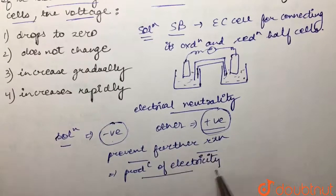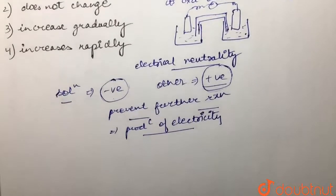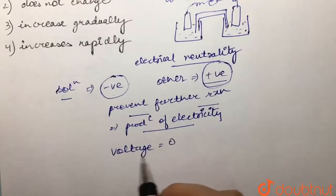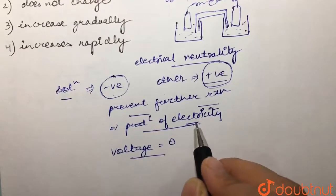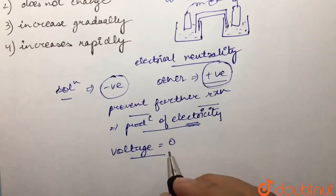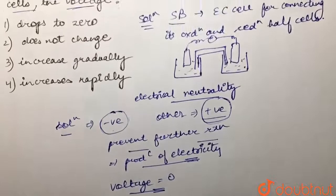basically prevent the production of electricity. Hence, we can say that our voltage would become zero because there is no flow of electricity. Because there is no electricity flowing, the voltage would become zero. If we look at the options, the first option is saying that it